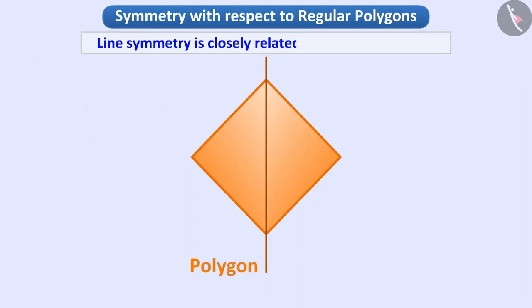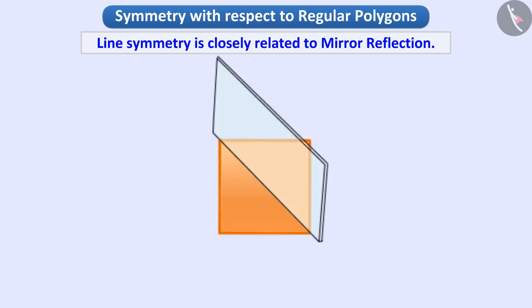Line symmetry is closely related to mirror reflection. If we place a mirror along this symmetrical line in the same figure, we see that the left part of the figure reflected in the mirror exactly matches the right part of the figure. What do you understand by this?